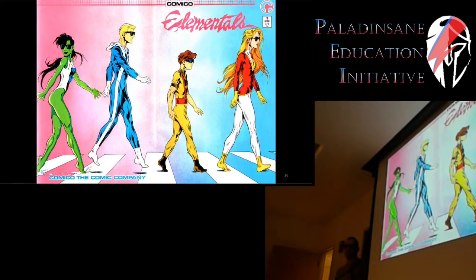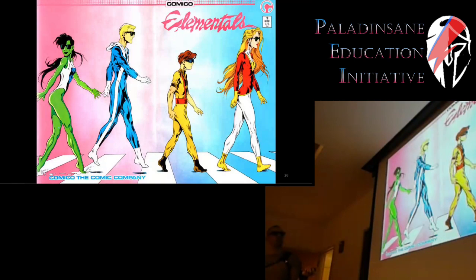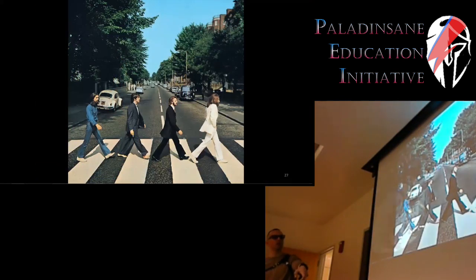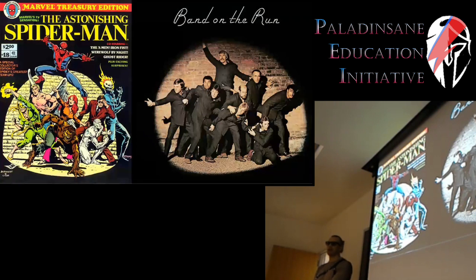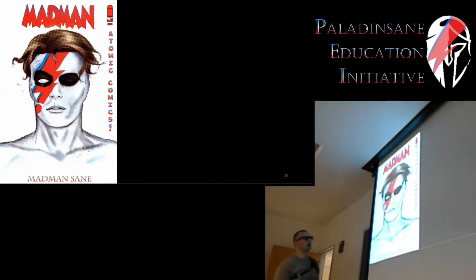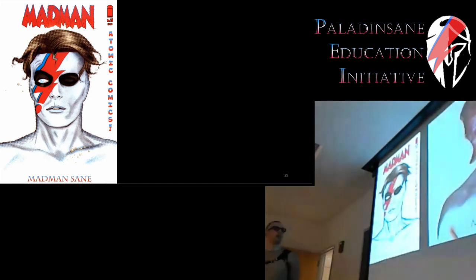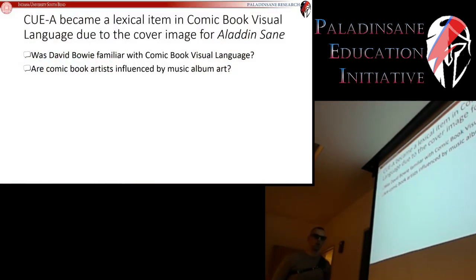For example, here we have the cover of The Elementals — does anybody recognize which album it was taken from? This is from Abbey Road by the Beatles. An artist saw this and was inspired to recreate it in comic book form. Then we have the cover for Astonishing Spider-Man, which is a recreation of Band on the Run by Paul McCartney and Wings. And very appropriately, we have this one from Madman — Mike Allred is the artist, and he was clearly influenced by the cover of Aladdin Sane. Artists have definitely looked to music album art as inspiration.